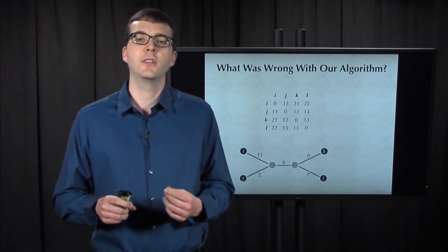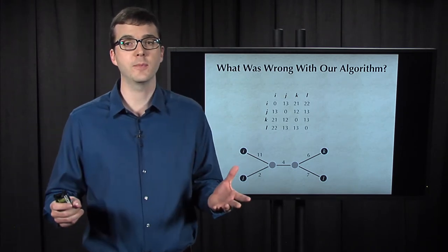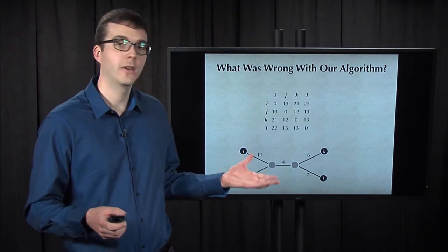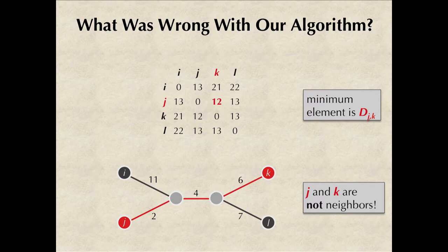Maybe you think I was mean enough to give you a non-additive matrix, but there does exist a simple tree fitting this matrix. If you don't believe me, here it is. So there must be something wrong with our proposed algorithm. If we look at the matrix itself, then the minimum element is supposed to correspond to neighbors J and K, but there's just one tiny problem with this, which is that J and K are not neighbors in the tree.